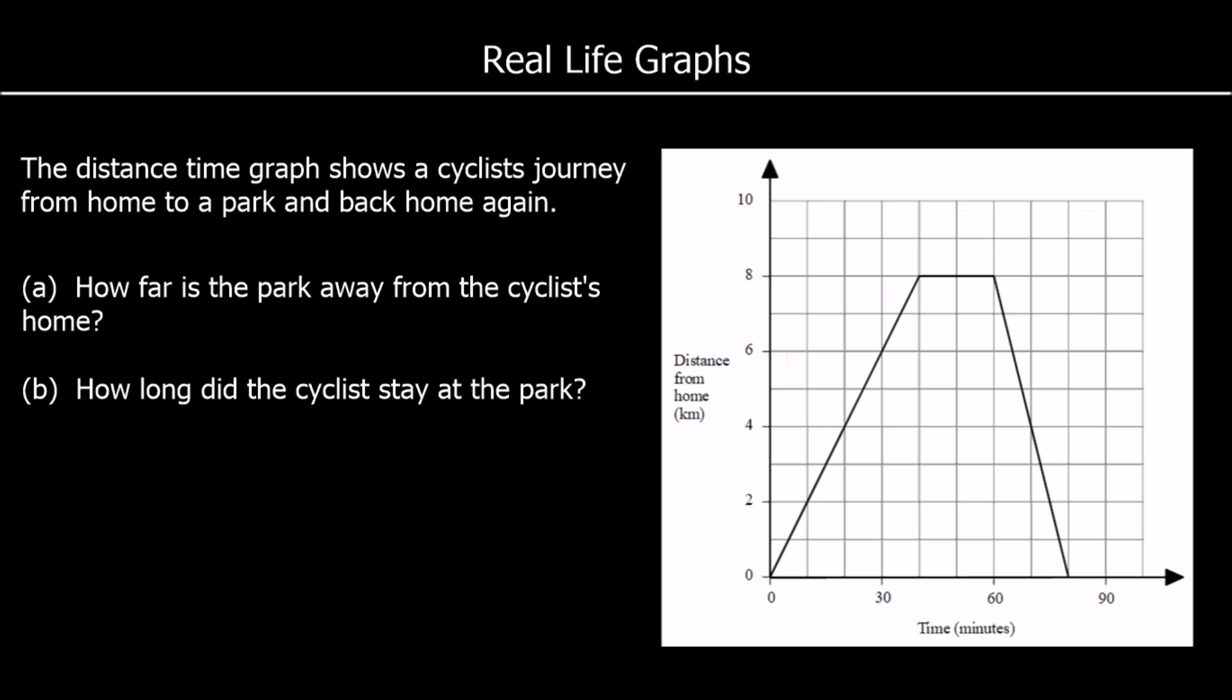This is a distance-time graph. The distance-time graph shows a cyclist's journey from home to a park and back home again. So a distance-time graph has got distance up one side and time along the bottom. Time's on the x-axis and distance is on the y-axis. The first question says how far is the park away from the cyclist's home? So this is them travelling to the park. The distance is getting further away as the time goes up. And then this is the furthest distance away, at 8 kilometres. So that must be the park. So it must be 8 kilometres away.